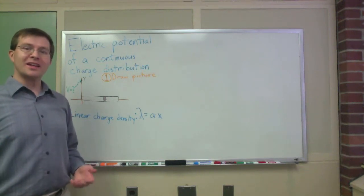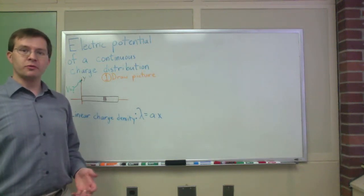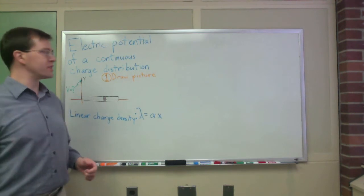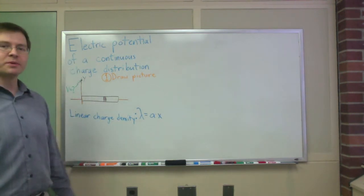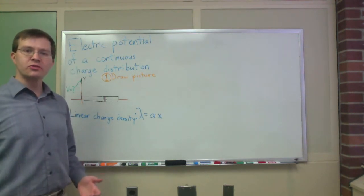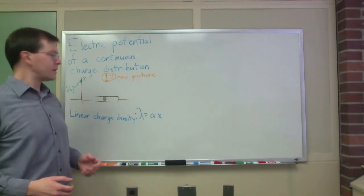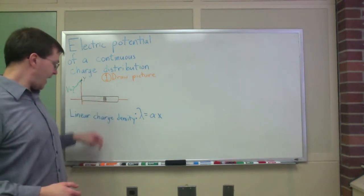Today I'd like to talk about an electromagnetism problem related to continuous charge distributions, specifically finding the electric potential of a continuously charged rod sitting along the x-axis.